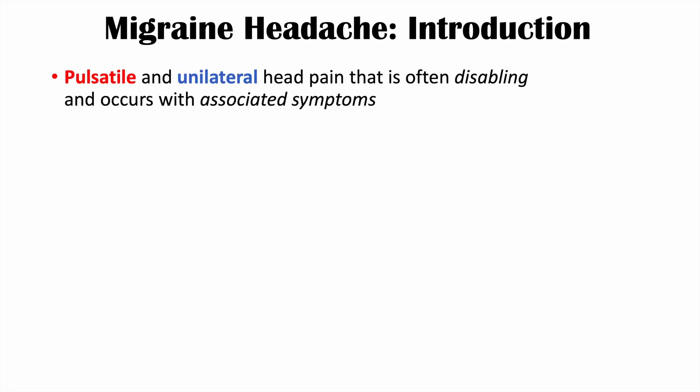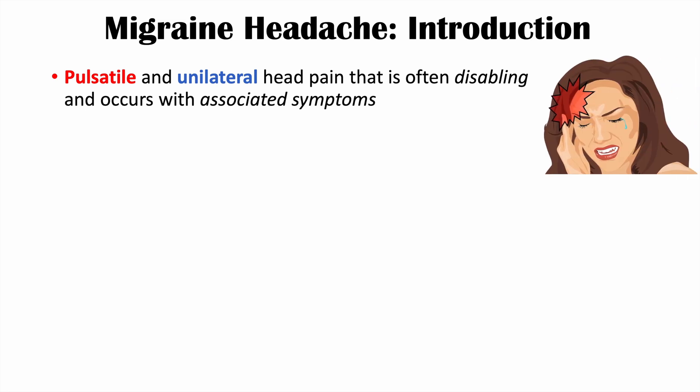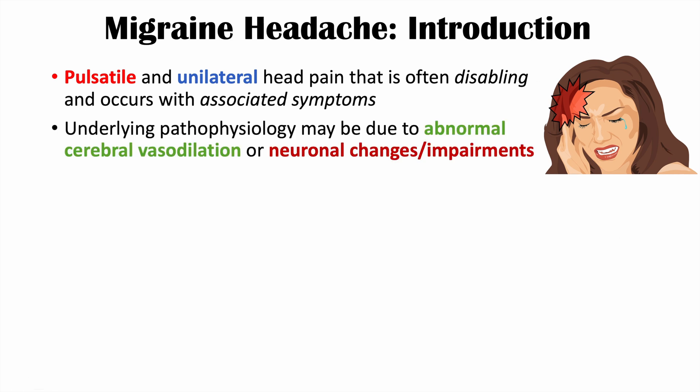Before we get into that, let's talk about migraine headaches briefly. Migraine headaches are pulsatile and unilateral head pain that is often disabling and occurs with associated symptoms. They are pulsatile, meaning they are pounding or throbbing in nature, and unilateral, meaning they often occur on one side of the head. The underlying pathophysiology is believed to be due to abnormal cerebral vasodilation or neuronal changes or impairments.